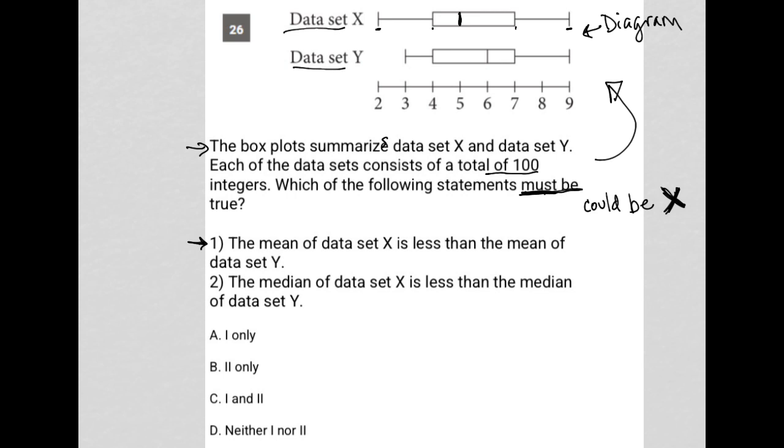So there's not much I can say about statement one. Statement two: the median of data set X is less than the median of data set Y. Well, that is provided. That's this line here, which lines up with five for data set X. That's this line here that lines up with six for data set Y. So yes, in fact, the median of data set X is less than the median of data set Y. So two is good.